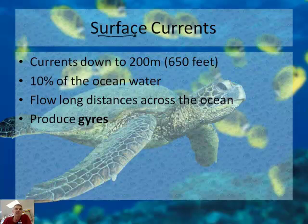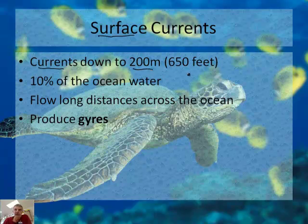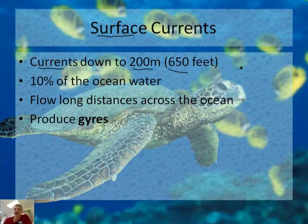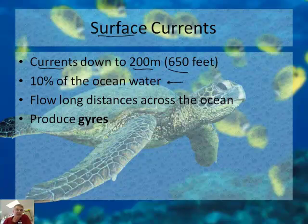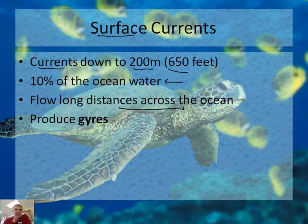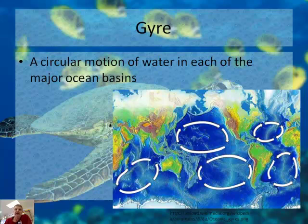A surface current is a current that goes down to 200 meters, which is about 650 feet. Remember, the oceans are much, much deeper — on average about 10 or 11,000 feet deep. So this is just the top part of the ocean, representing about 10% of the water. Surface currents flow long distances across the ocean and produce something called a gyre — a circular motion, like a gyroscope.